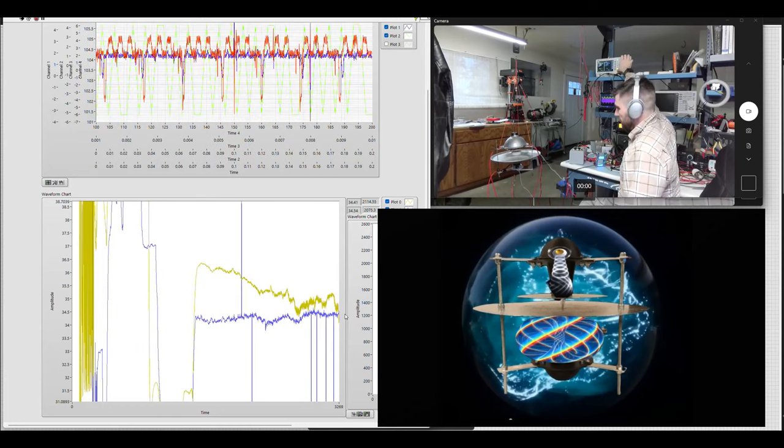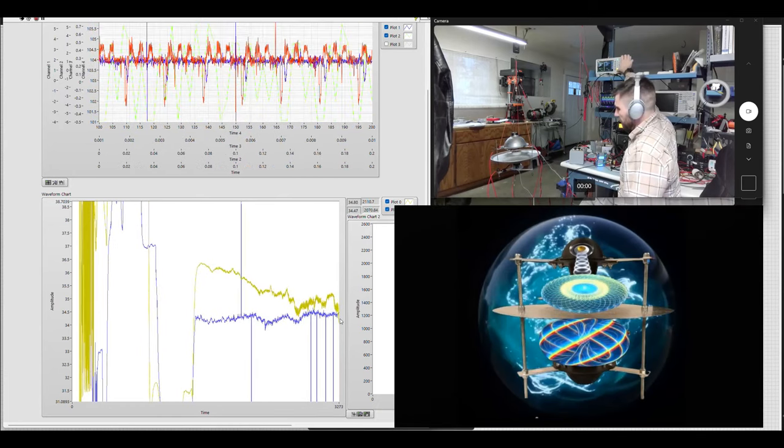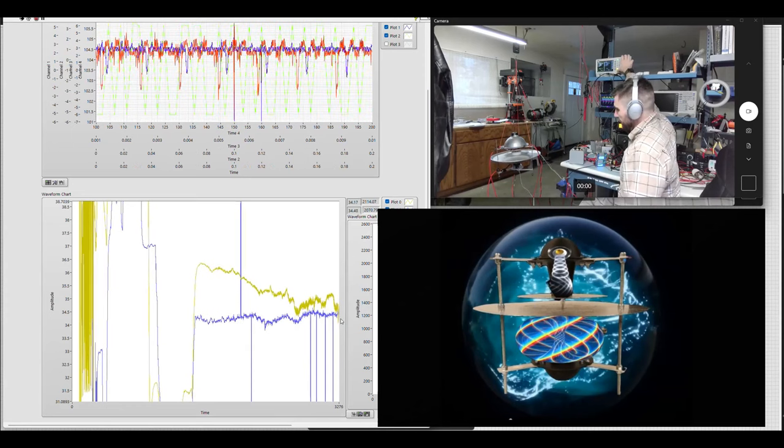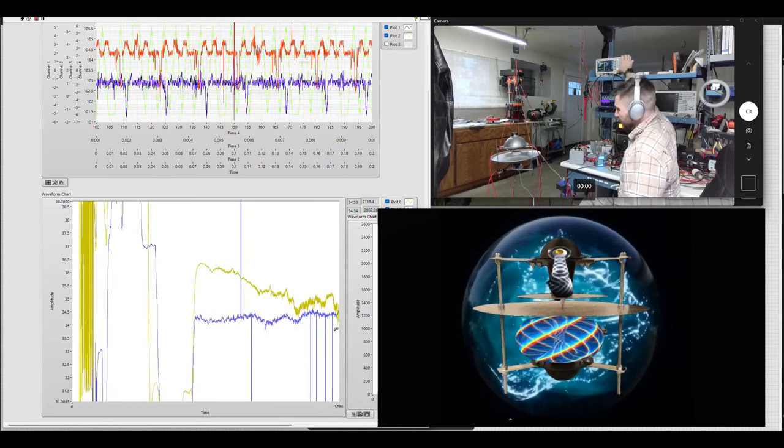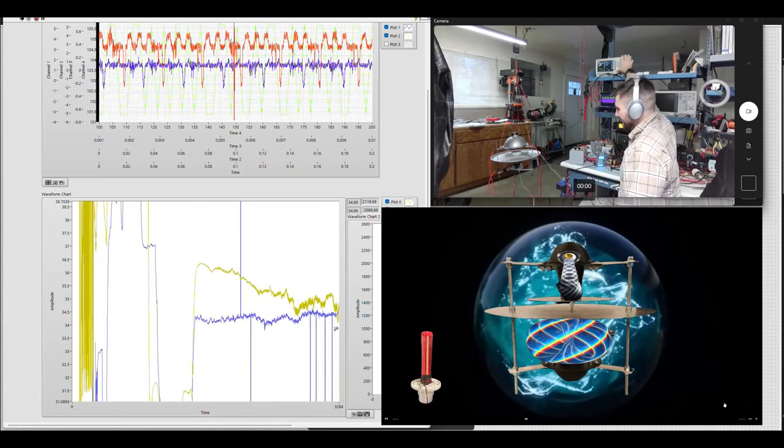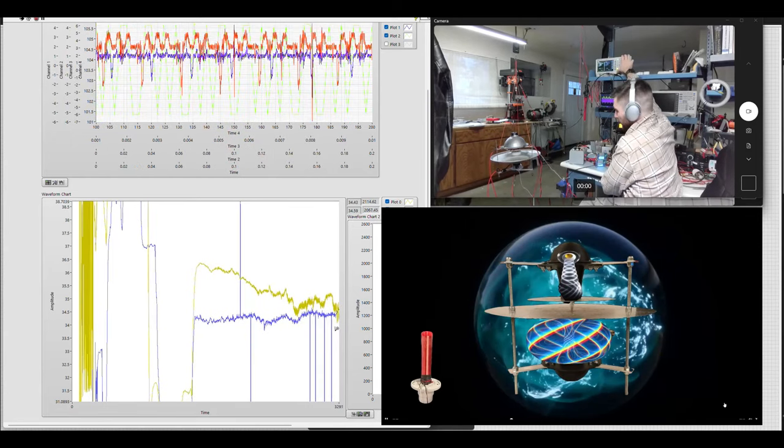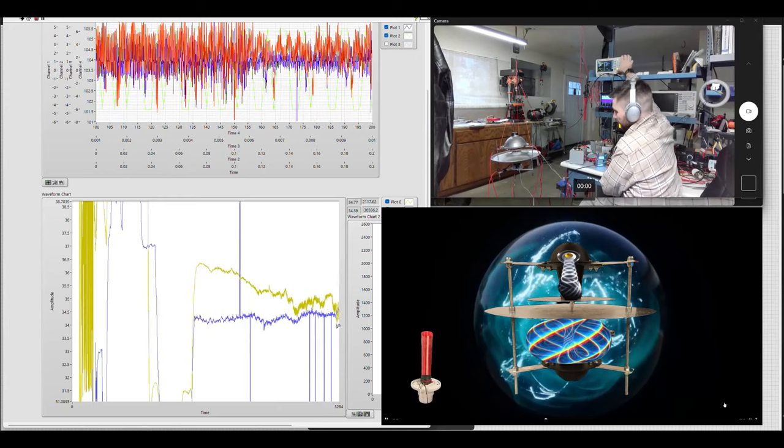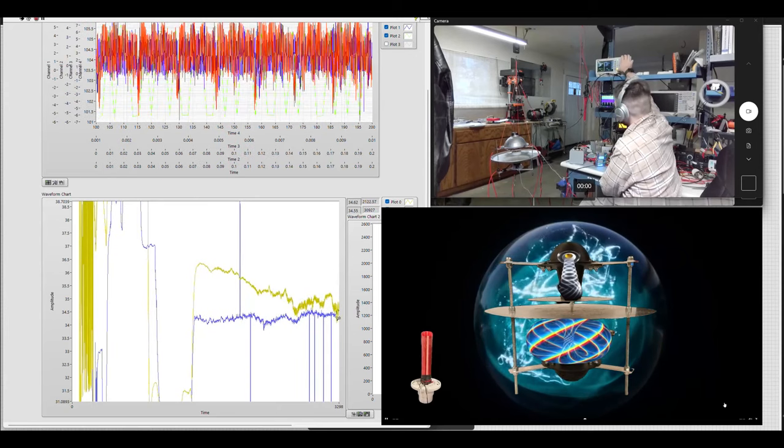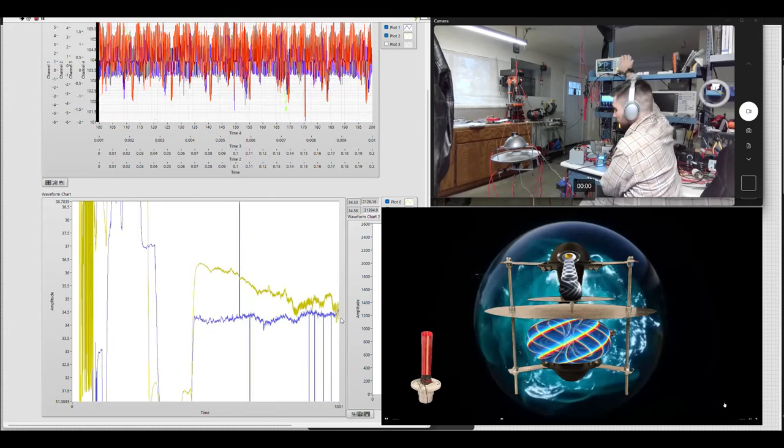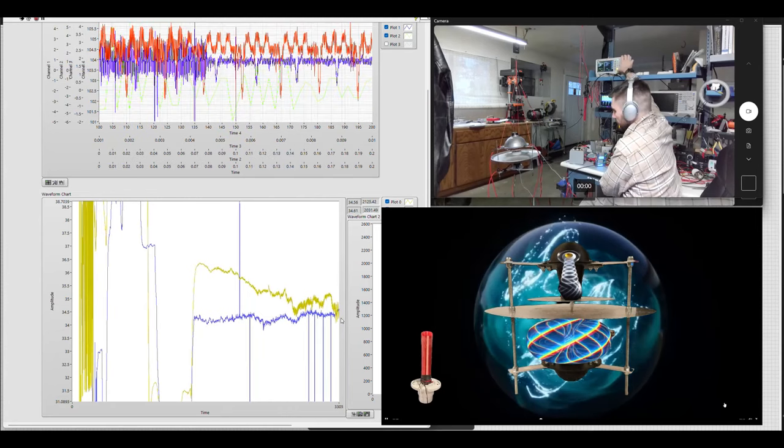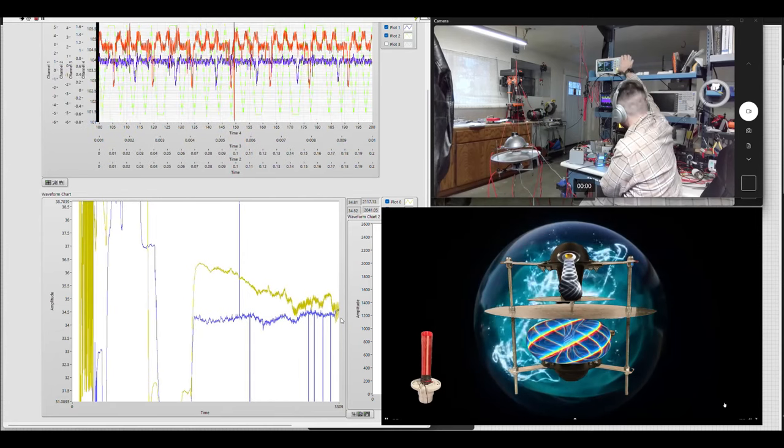Every time the ultrasound is turned off, the energy from the bottom disc is then thrust into the center disc itself. Before the upper disc can get charged again, the ultrasound is turned back on. Because the Tesla coil has a neutral field, it is not charged positive or negative.